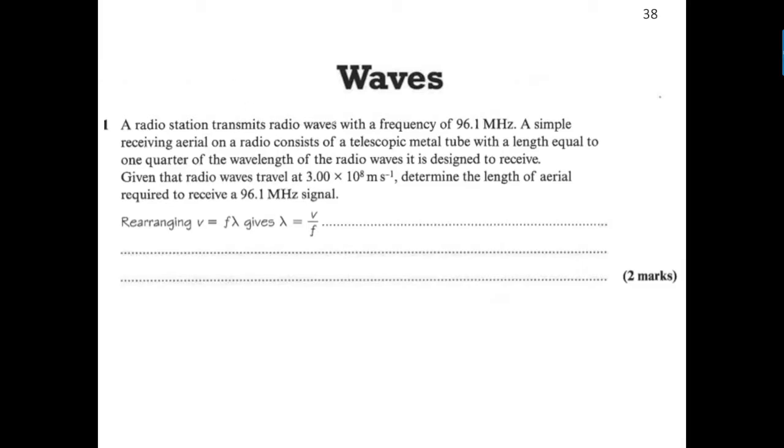A radio station transmits radio waves with a frequency of 96.1 megahertz. That's a key bit of information. Because it's megahertz, it's 96.1 × 10⁶ Hz. We're told a simple receiving aerial on a radio consists of a telescopic metal tube. There's the aerial - it's basically a tube.